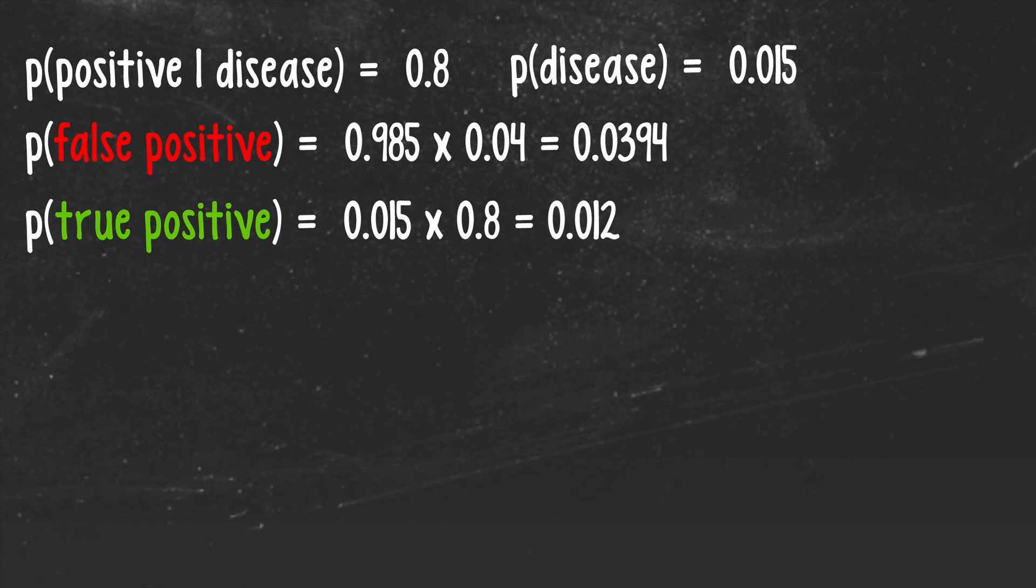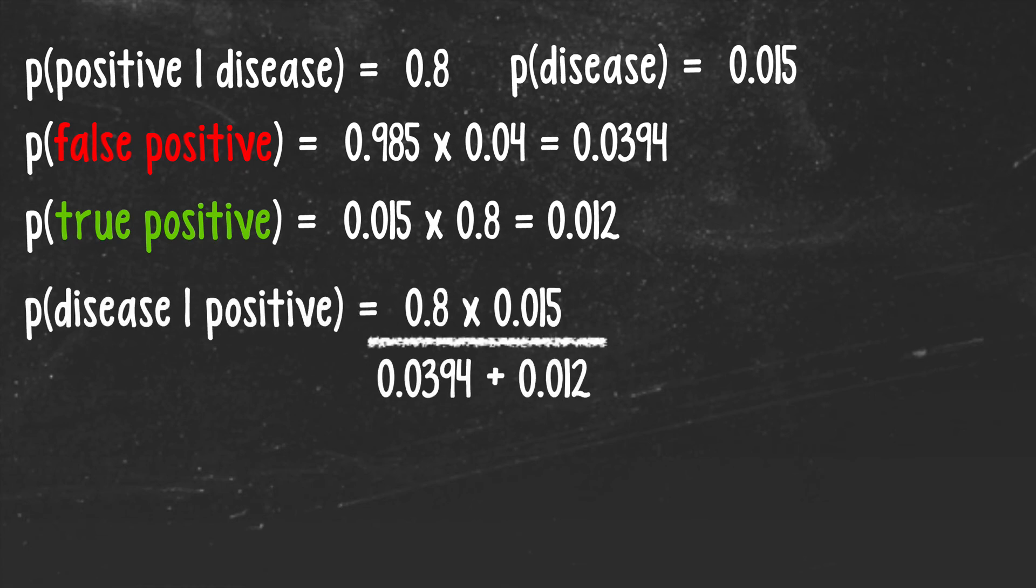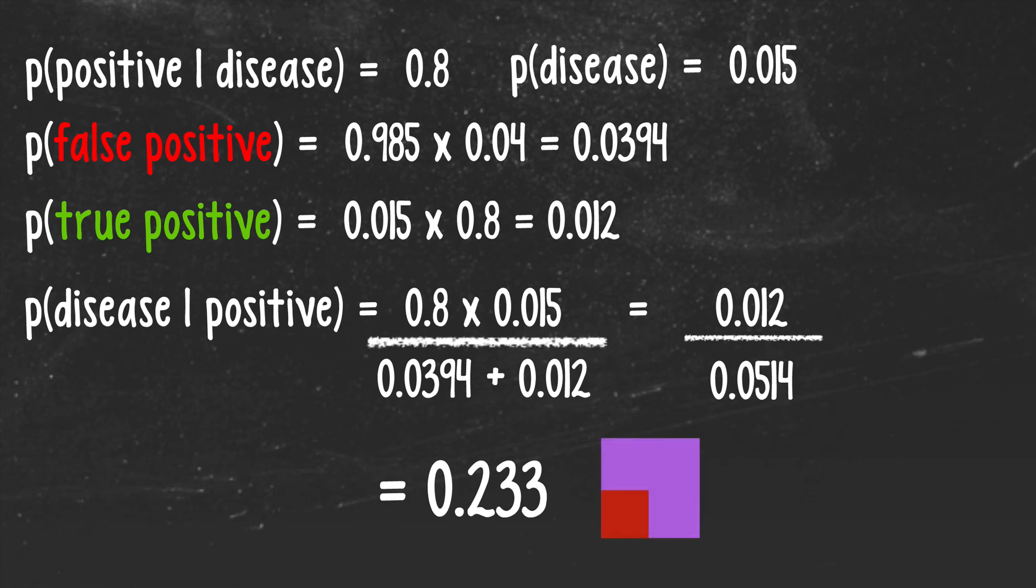The probability of a true positive is the probability of having the disease, 1.5%, multiplied by the probability of getting a positive test result when you have the disease, which we know is 80%. So now we are finally ready to run the numbers and calculate the answer to our big question. If we look carefully at this calculation, we can see that what we are doing is essentially running the same algorithm as we did for our intuitive approach. The equation is expressing the probability of getting a true positive test result divided by the probability of getting any kind of positive test result, true or false. And if we do the math, we get the same 23% probability that we got from our intuitive approach for actually having the disease given a positive test result.